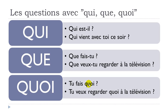You just put QUOI at the end — for example: TU FAIS QUOI? It has exactly the same meaning as QUE FAIS-TU, but you keep the normal subject-verb order. In that case you definitely need to raise your voice at the end: TU FAIS QUOI? And similarly: TU VEUX REGARDER QUOI À LA TÉLÉVISION? Let's raise the voice at the end to make it clear it's a question: TU VEUX REGARDER QUOI À LA TÉLÉVISION?